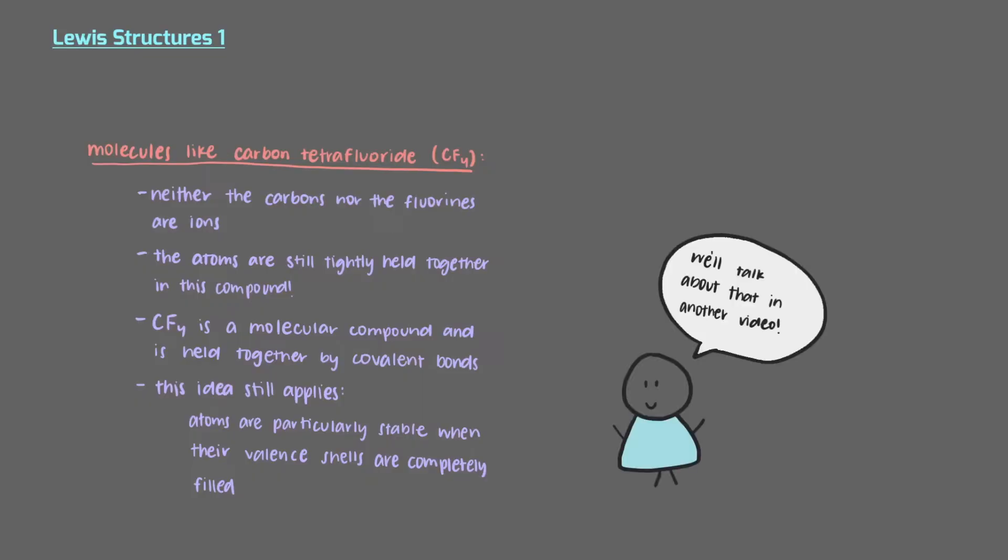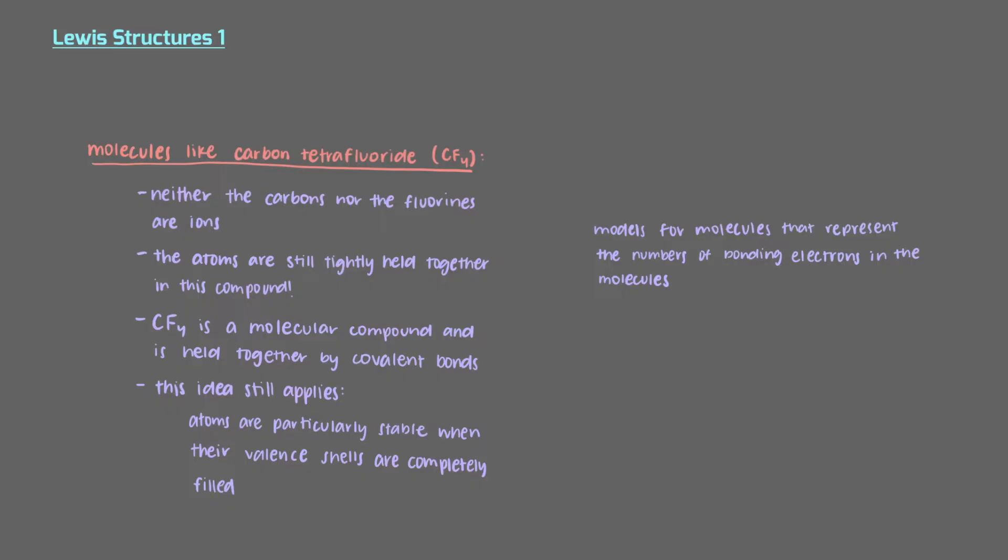That's a topic for a later video on molecular orbitals. For now, we'll focus on constructing models for these molecules that represent the number of bonding electrons in the molecules. These models are called Lewis structures.